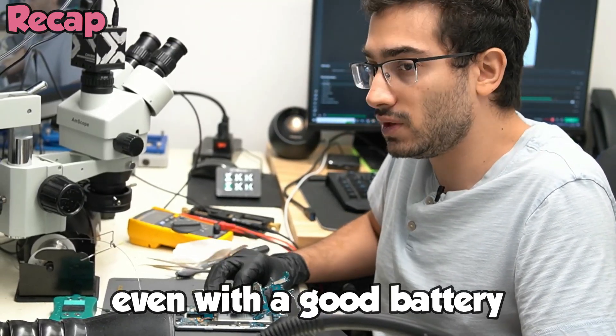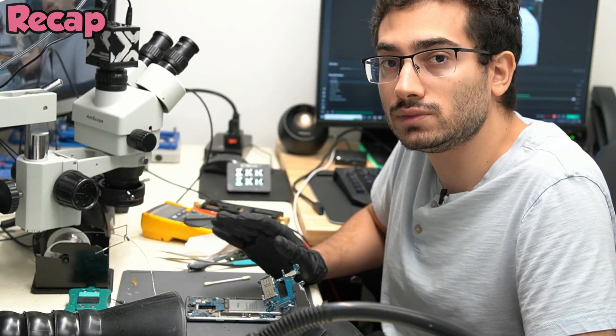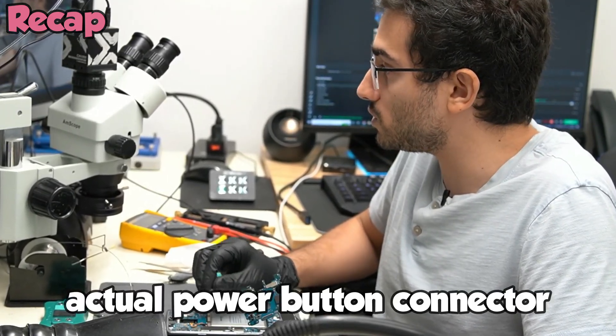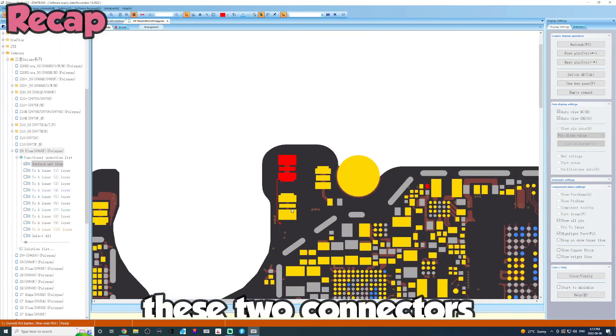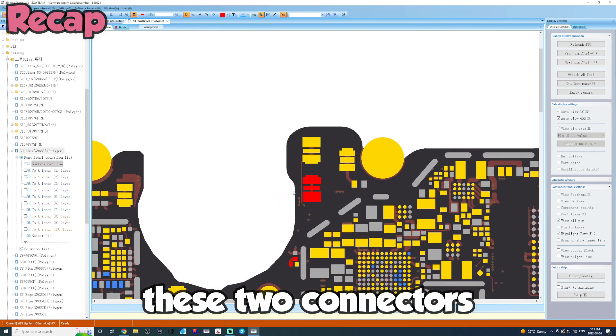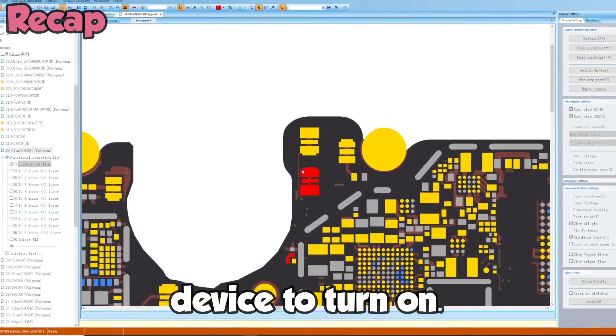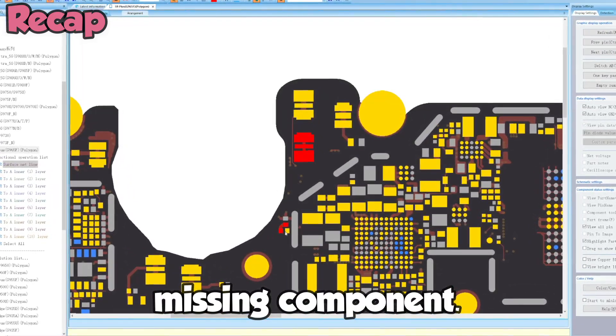But even with a good battery that we knew had juice, prompting to boot didn't do anything. We tested the power button in the frame, it was good. So then we checked the actual power button connector on the board and there was some issues there. When prompting to boot, these two connectors get connected together and it prompts the device to turn on, but there was a problem here. There's some corrosion and it looked like a missing component.